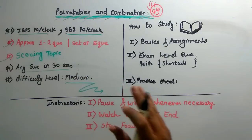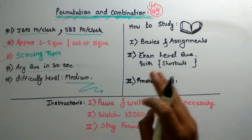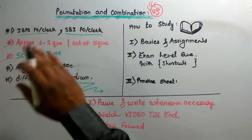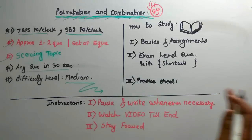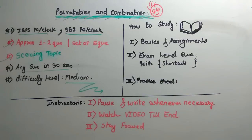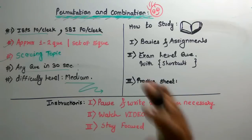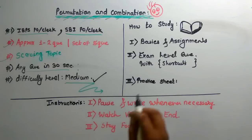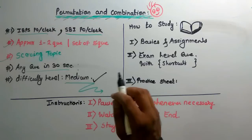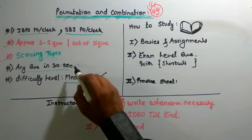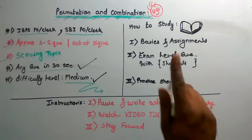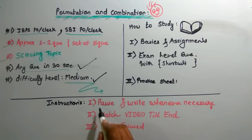So permutation and combination are what we are going to see. Keep in mind all these things. Besides MBA entrance and other government exams, this topic is useful. So the difficulty level is medium — keep that in mind. The next important thing is you can solve any question within 30 seconds if you follow my rules. There are some instructions for you.